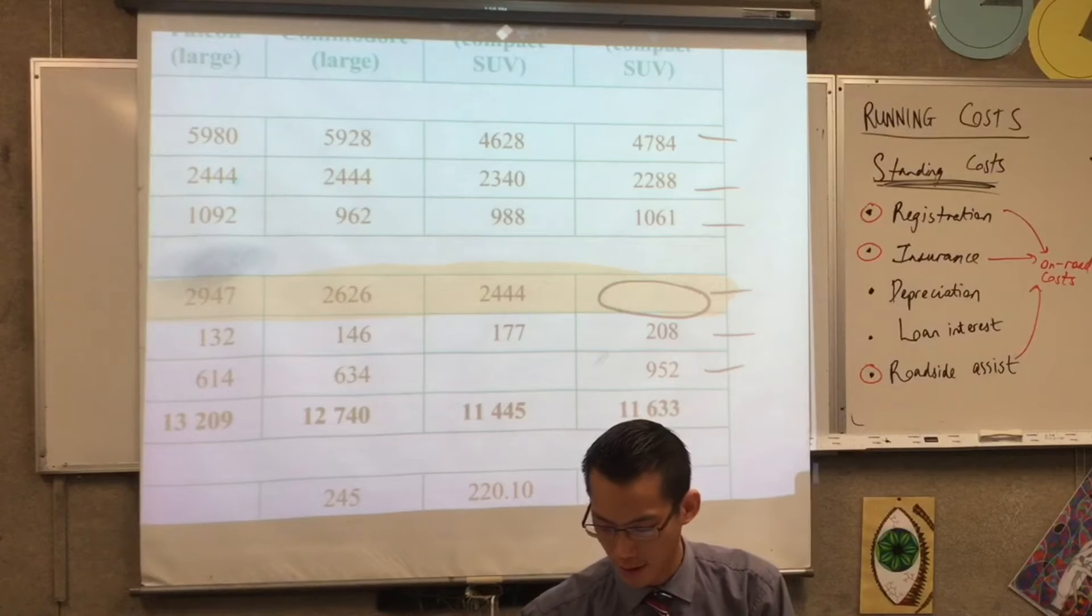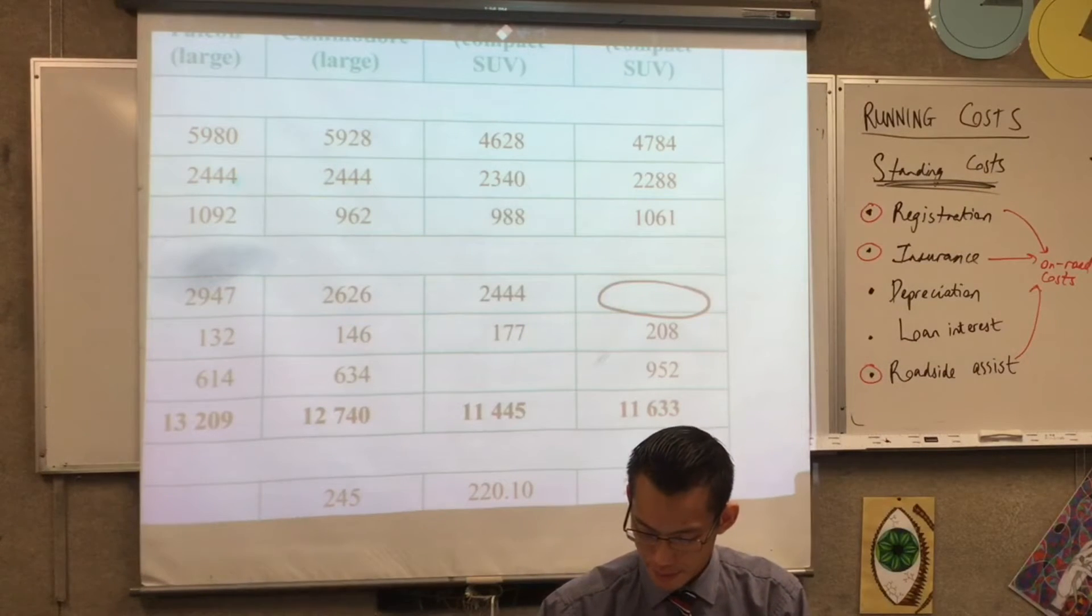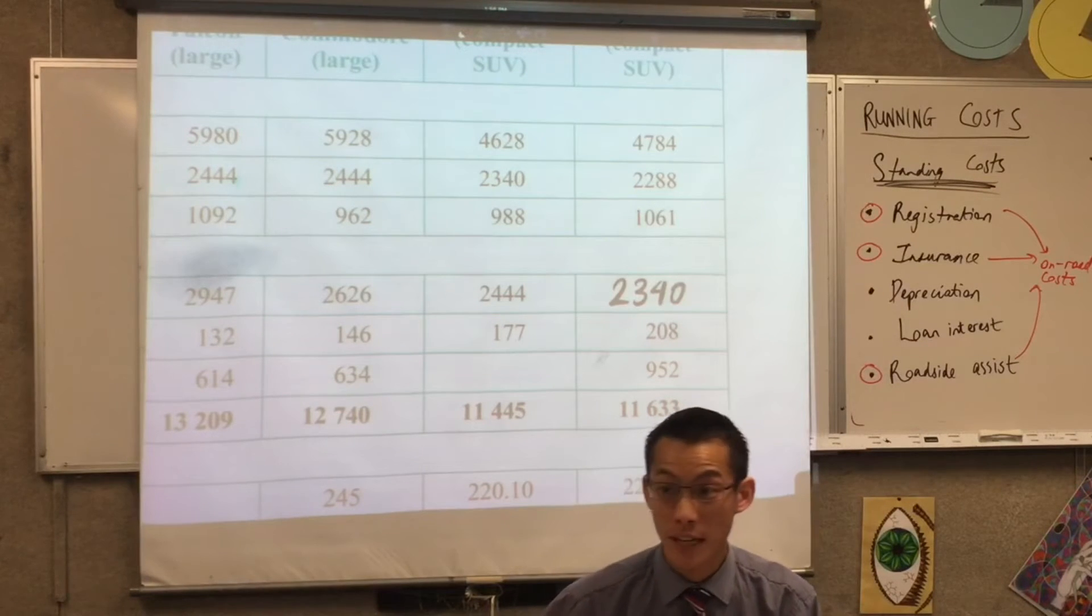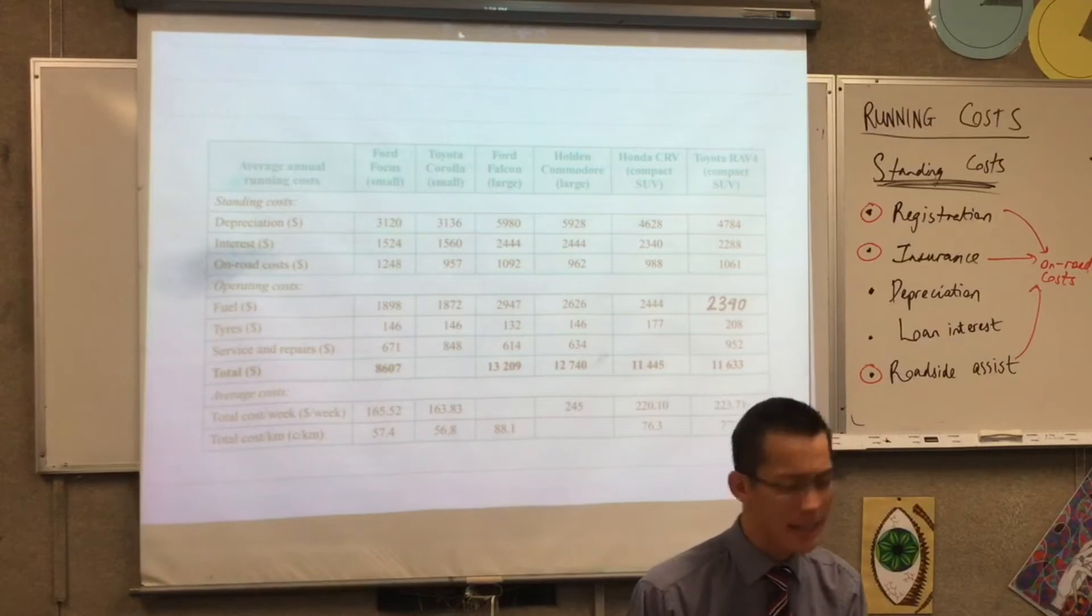All of these numbers should add up to 11,633. So this number that's left should be the difference between 11,633 and all the other expenses. Can someone calculate it for me? 2,340.